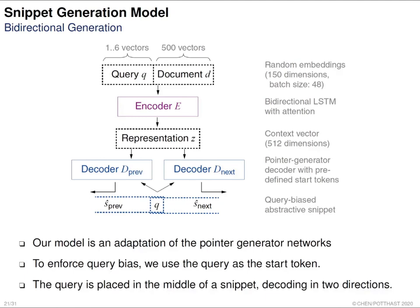We developed a bidirectional generation model. The input is a query and a document; the output is a query-biased abstractive snippet. We use an encoder to encode the query and document into a representation. Then we have two decoders: one predicts words that appear before the query, and the other predicts words after the query. Combining both decoders gives a query-dependent snippet with the query word exactly in the middle.